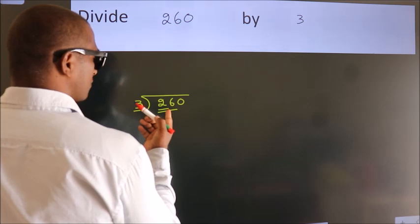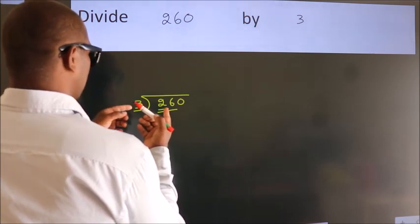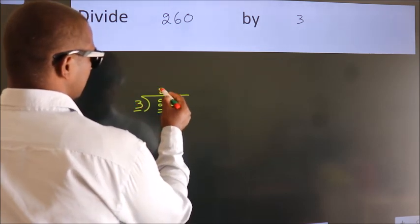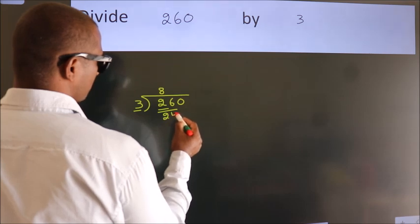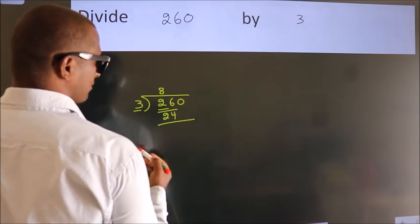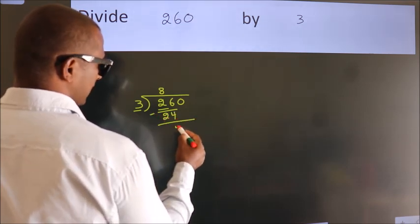A number close to 26 in the 3 table is 3 times 8, which is 24. Now we should subtract. We get 2.